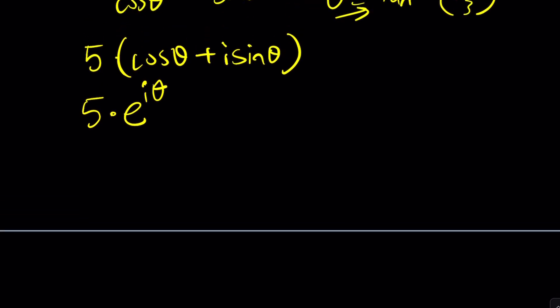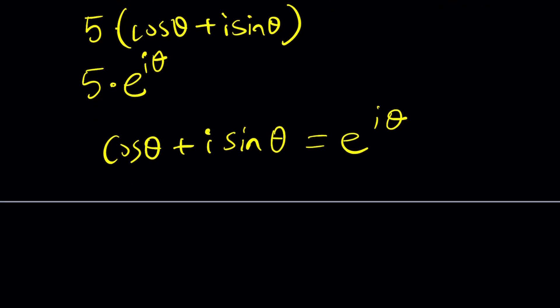Great. So based on Euler's formula, cosine theta plus i sine theta can be written as e to the power i theta. Nice. But what happens if there's a minus sign? Because my expression has a minus sign. Cosine z minus i sine z. How am I going to write it? They don't agree, right?